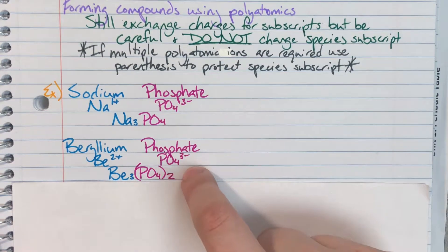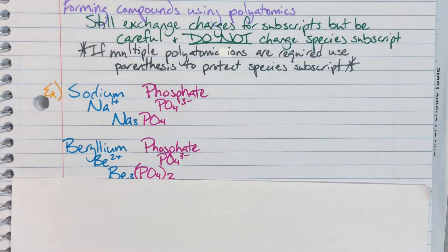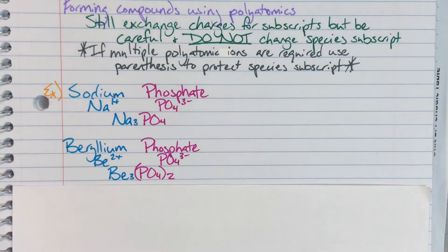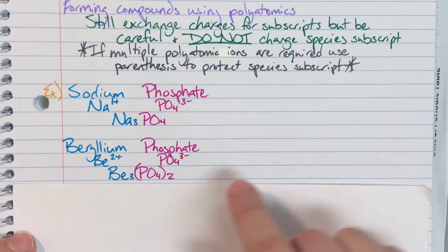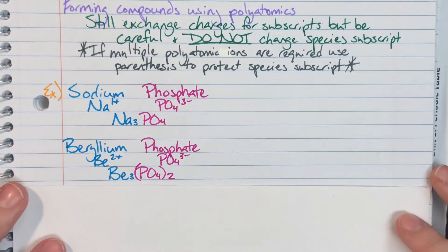Remember, especially with polyatomics, since we have multiple numbers here, it can be easy to mess this up. So be very careful that you are taking phosphate charge, not phosphate subscript. I don't care what phosphate subscript is. That gives me absolutely no information for what beryllium is going to be. It has to be phosphate's charge.